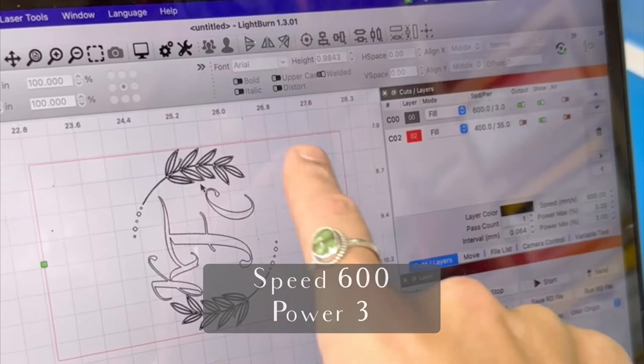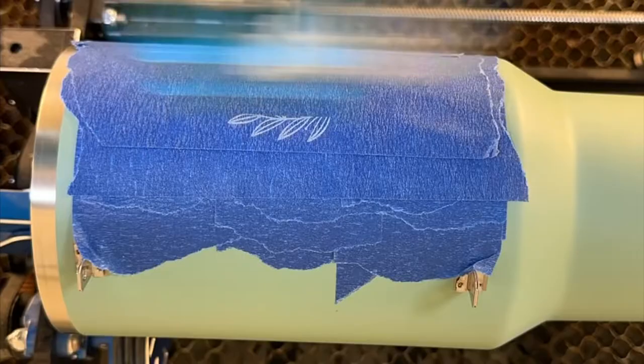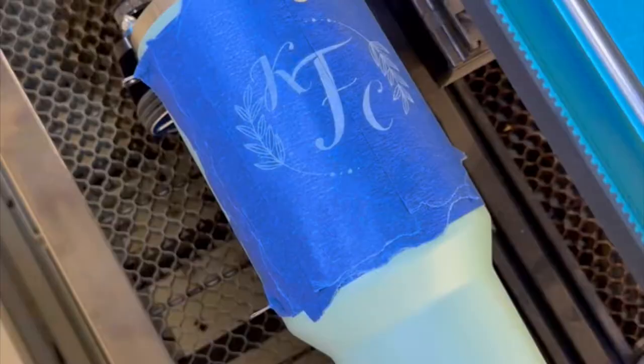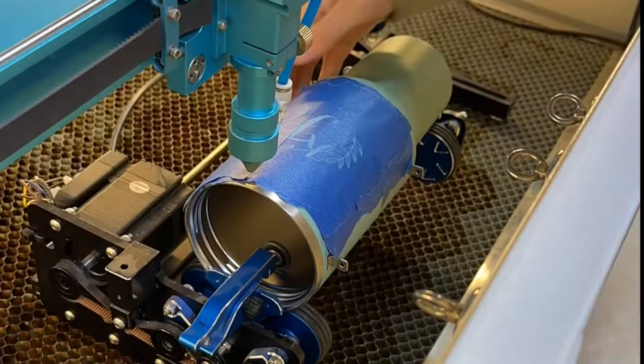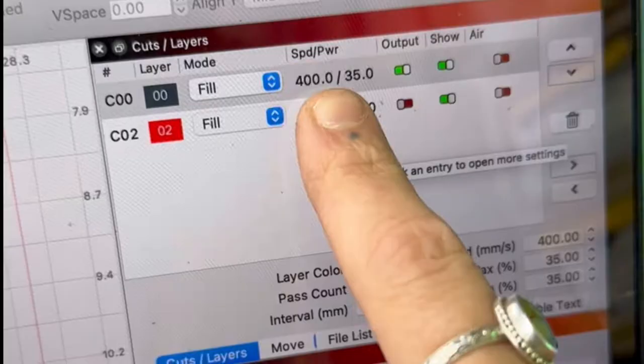And then I inputted the settings of 600 speed, three power to do a test run on this cup. Having the speed so high and power so low allows the laser only to burn through the first layer of painter's tape. So then I can see the design and make sure everything is lined up perfectly and then take the tape off and engrave the cup for real now.